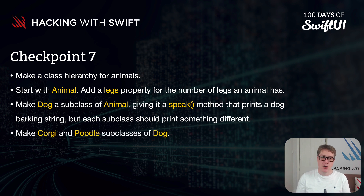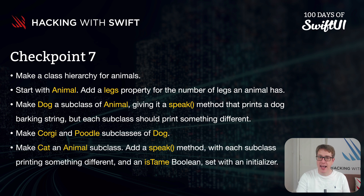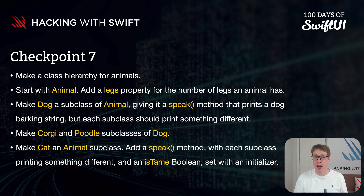Specifically, you want to have a corgi and poodle subclass of dog, and dog in turn inherits from animal — so there's a hierarchy here. Then have cat being another animal subclass, with a speak method where each subclass prints something different.